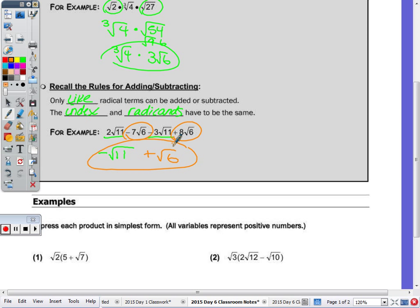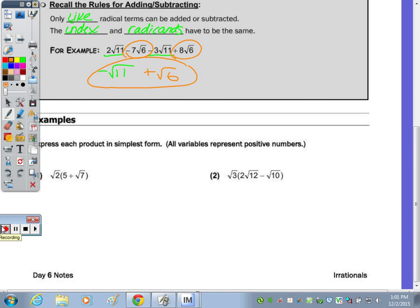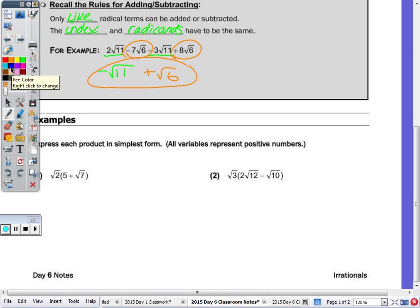So with today's notes, we're going to be combining both multiplication and addition or subtraction. In question number 1, the directions say to express each product in simplest form, so every radical needs to be broken down or simplified, and all variables represent positive, because we can't take the square root of a negative and get a real number.